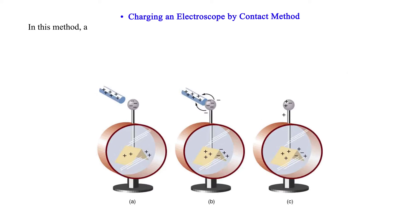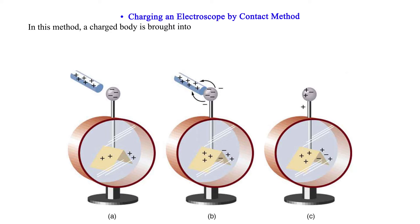Charging an electroscope by contact method. In this method, a charged body is brought into contact with the cap of the electroscope as shown in the figure below.